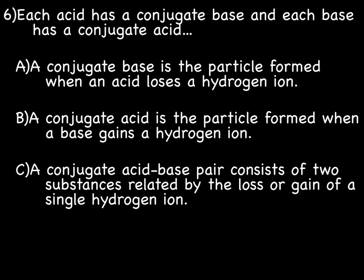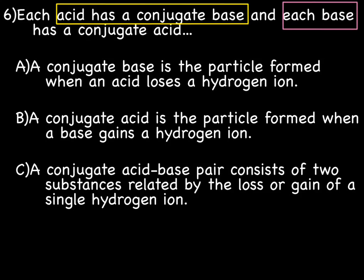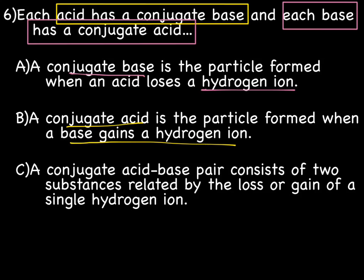According to Bronsted-Lowry, each acid has a conjugate base and each base has a conjugate acid. We call these conjugate acid-base pairs. A conjugate base is the particle formed when an acid loses a hydrogen ion. And a conjugate acid is a particle formed when a base gains a hydrogen ion. And a conjugate acid-base pair consists of two substances related by the loss or gain of a single hydrogen ion.